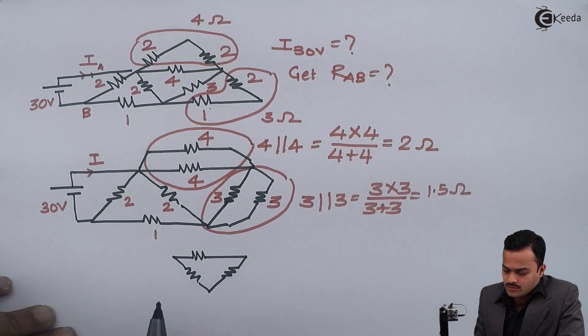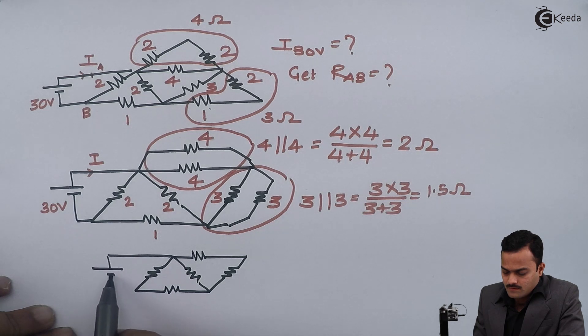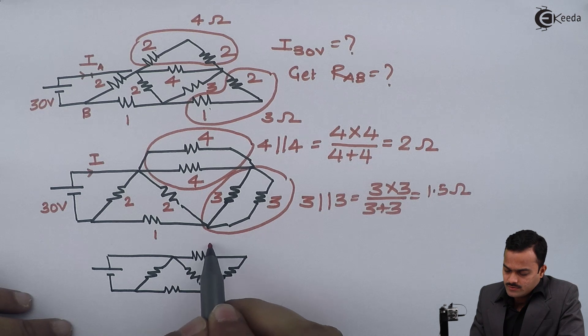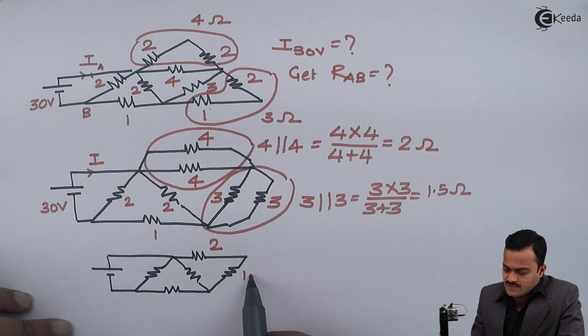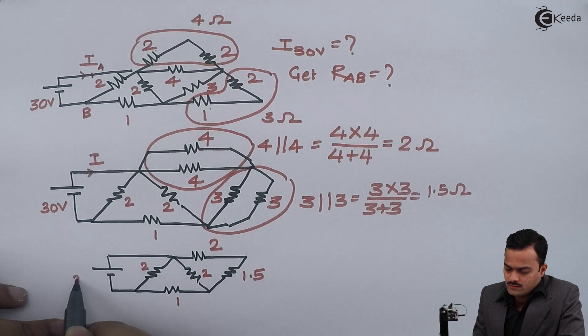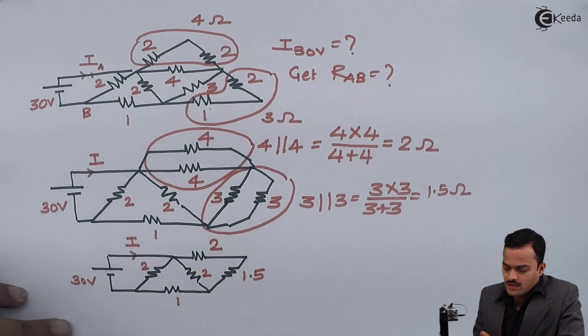3 ohm and 3 ohm will become 1.5, and the rest of the circuit will remain as it is. So 2 ohm not touched, this 2 ohm also remains untouched. Battery of 30 volts will remain as it is. So this is 2 ohm, this is 1.5, this is 2, 2, 1, 30 volts, and this is battery current I.